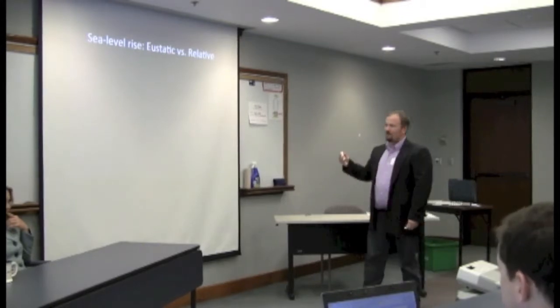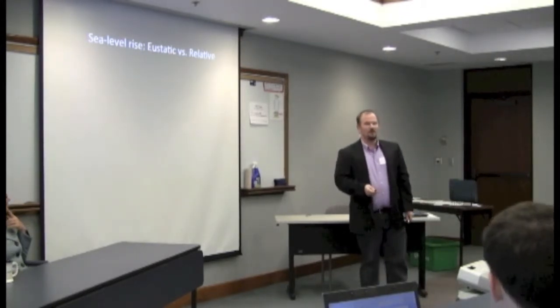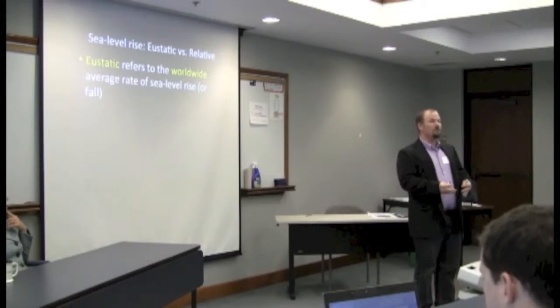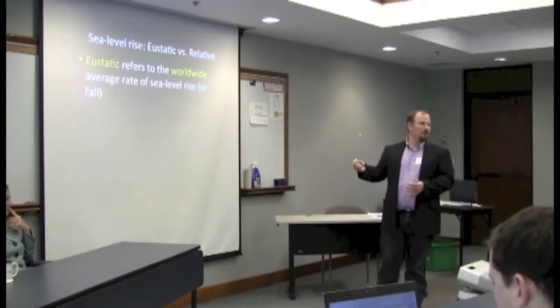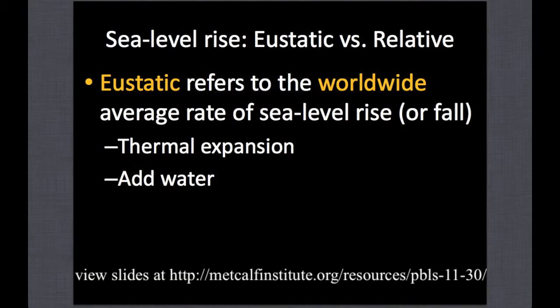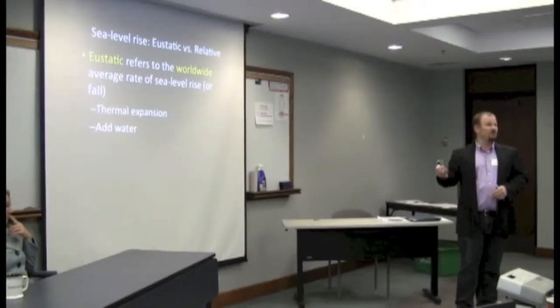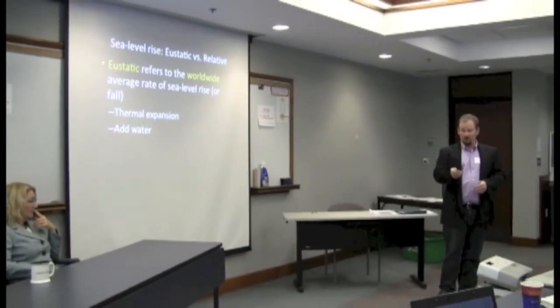When we talk about sea level rise, there are really two components we need to think about. We need to think about eustatic sea level, which is global sea level rise. Most projections—if you pick up a paper written by Rahmstorf or similar authors—are talking about eustatic, global sea level. That's very important, but we also need to understand there's relative sea level. With eustatic sea level, there are two real ways we can change it: we can warm up the water, or we can add water to the ocean.